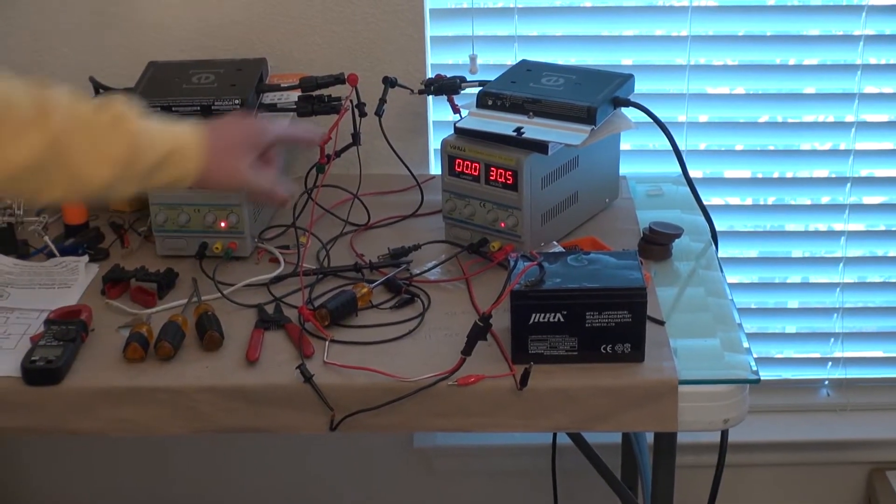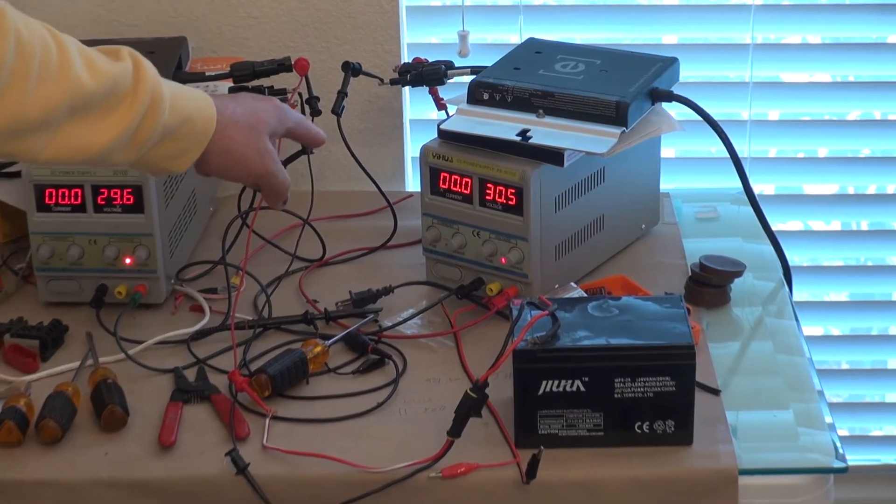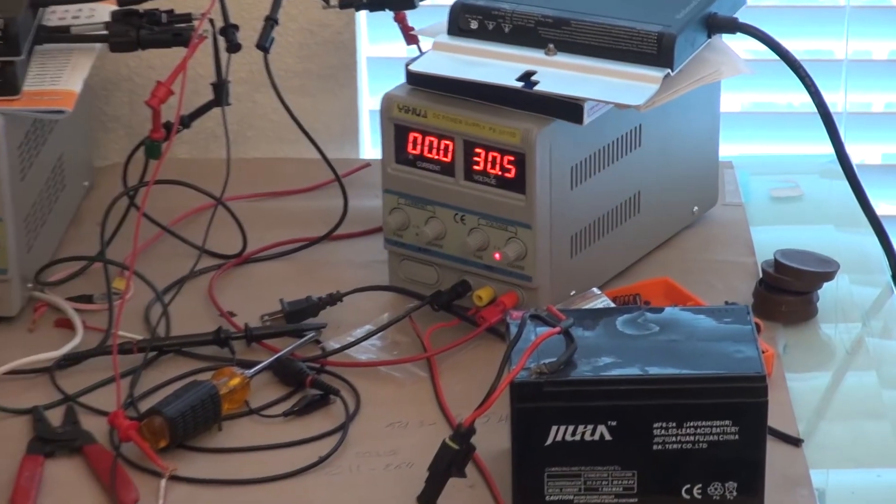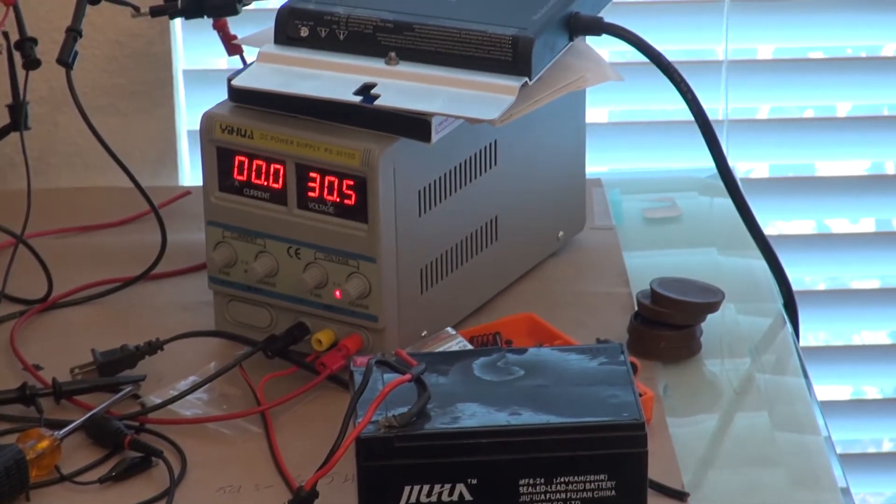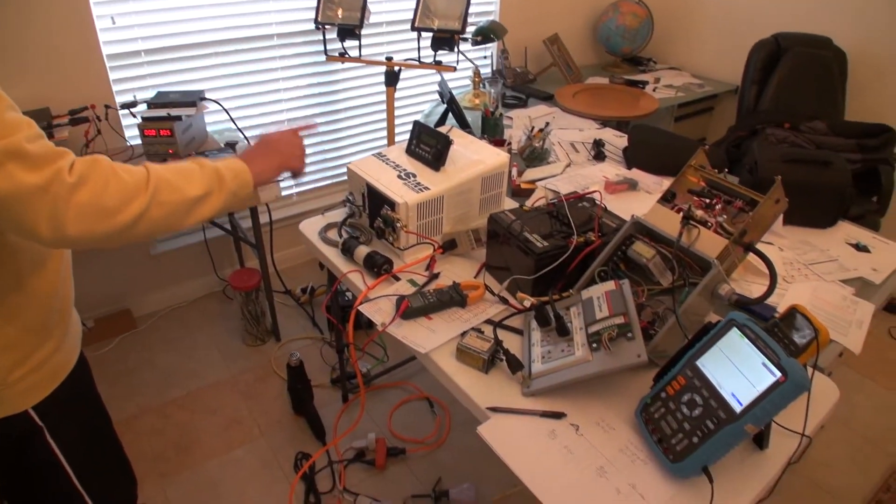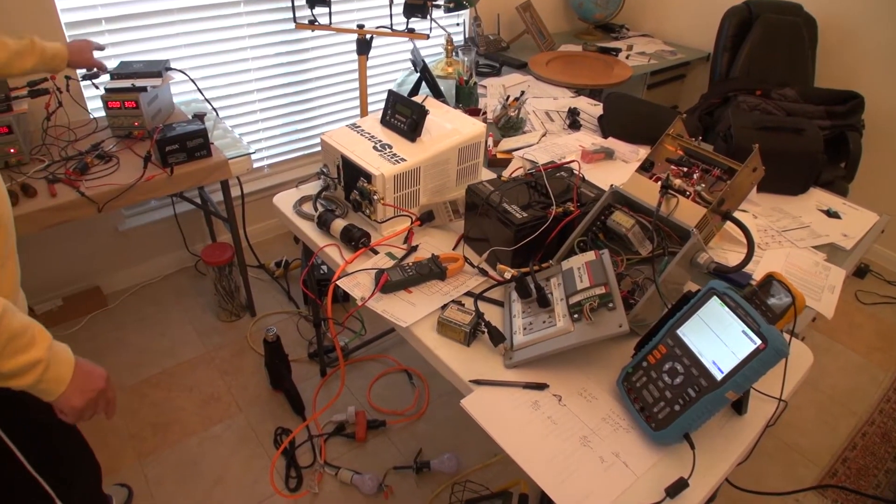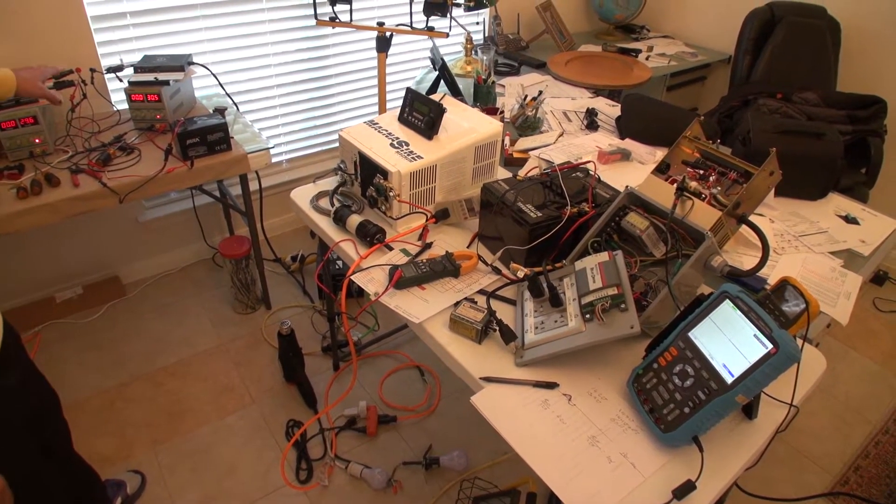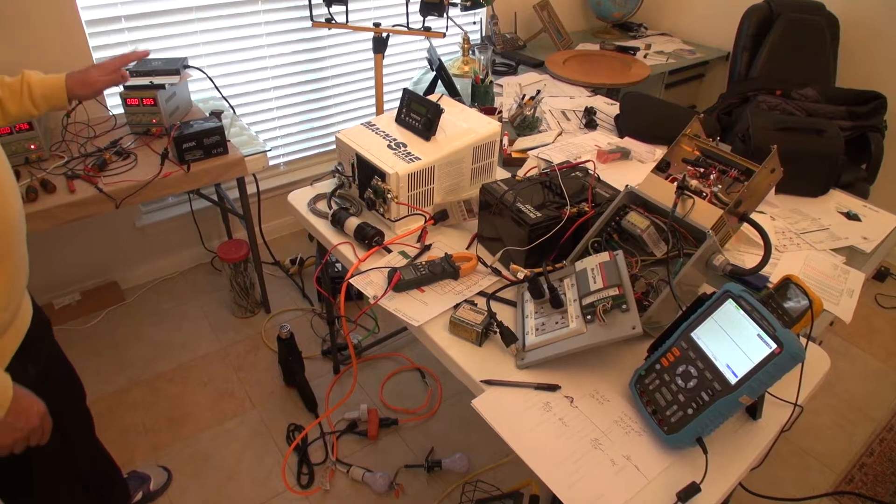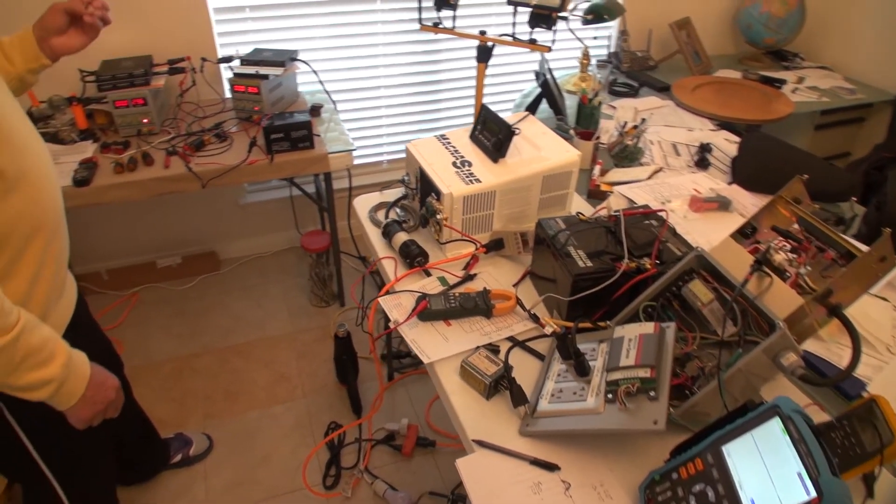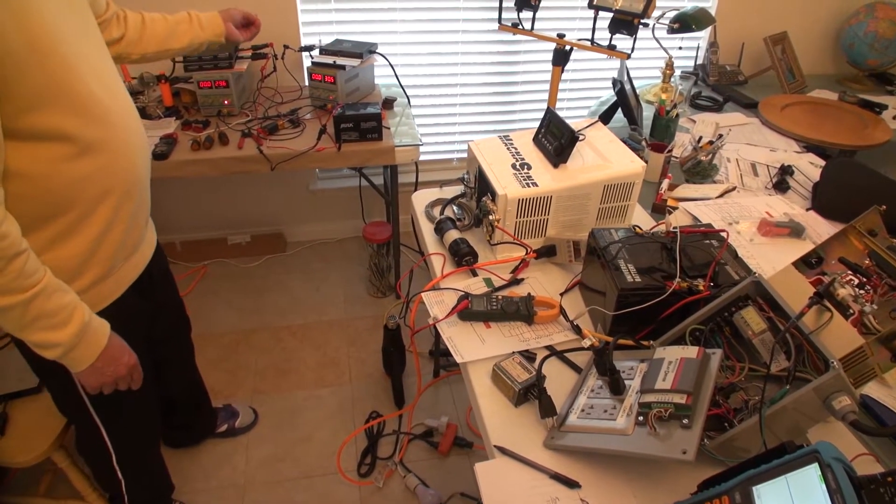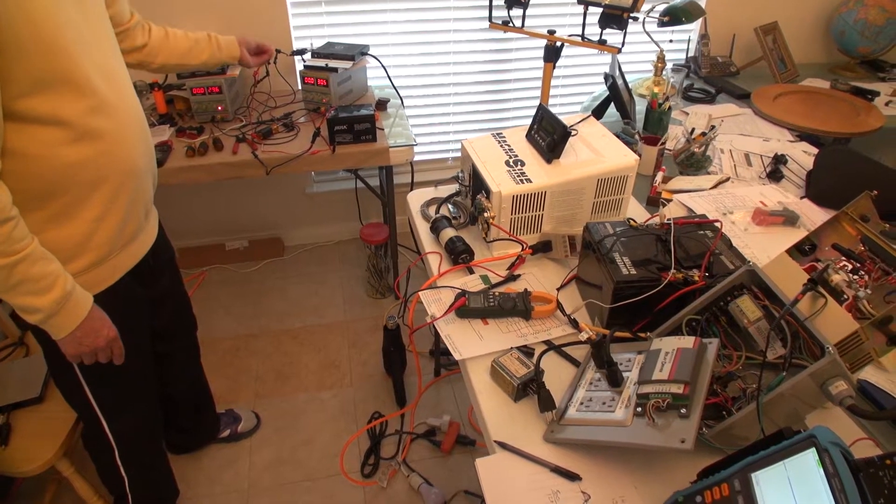As you can see right now, neither one of these macro inverters is pulling any amount of current. The reason is we disconnected our dump load and that caused the voltage of the battery to pass 28, get to 30, which shifts the frequency and causes the inverter to go off. The inverter will not come up; this is a feature built inside this macro inverter, grid-tie inverter.